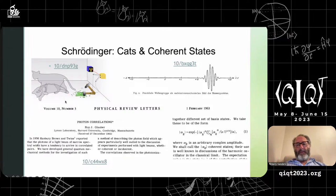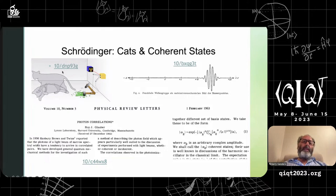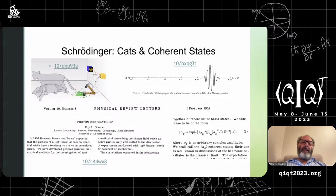Strictly speaking, there's entanglement involved — the cat is dead if the nucleus decayed, and alive if it didn't. So exactly what would be meant by Schrödinger cat states is subject to debate, but historically we've tended to refer to them as a superposition of dead and alive. This paper 10/DNP93G refers to Schrödinger's paper when he posed the cat paradox.